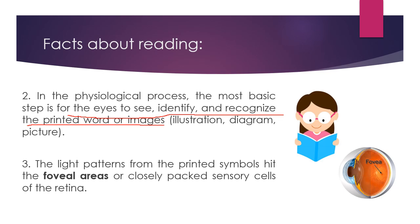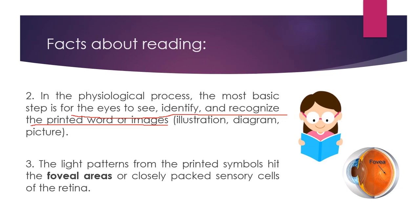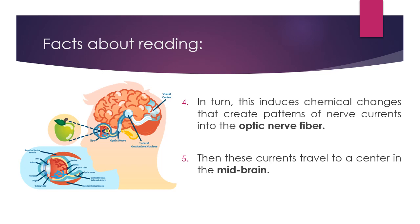So it looks like this — this is our eye. When we read something or look at something, the light patterns from those printed symbols will hit the foveal areas of our eye. This then induces chemical changes that create patterns of nerve currents into the optic nerve fiber. After receiving signals at the foveal areas — for example, after looking at an apple or an image of an apple — it reaches the foveal areas and induces chemical changes into the optic nerve.